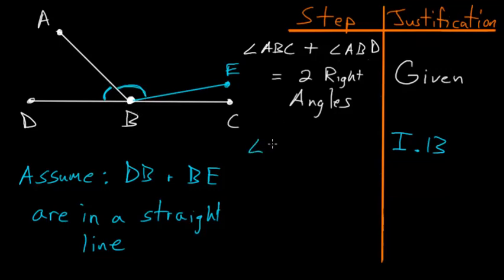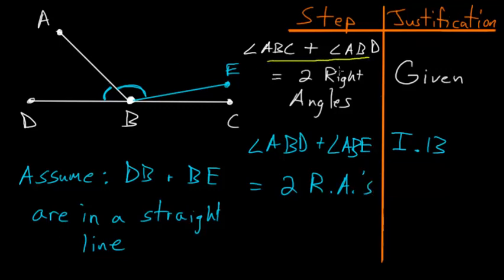So let's write that down: the angle ABD plus the angle ABE are equal to two right angles. Notice that since these two angles here are equal to two right angles and these two angles here are also equal to two right angles, then we know due to common notion number one that these pairs of two angles must be equal to one another.